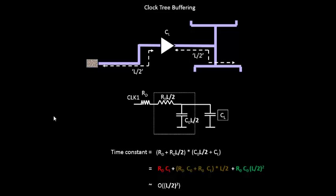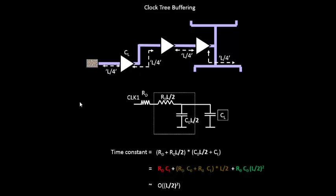Now let us see what happens if we insert even more buffers. We will place two more buffers exactly at the center of each L/2 segment, so each new segment is L/4. The load capacitance, which initially was at the far end, then shifted to the first buffer, now shifts to each intermediate endpoint because the long wire is broken into equal halves again. So we have broken the long wire into short equal segments of length L/4, and the RC network equation changes to L/4 as well.